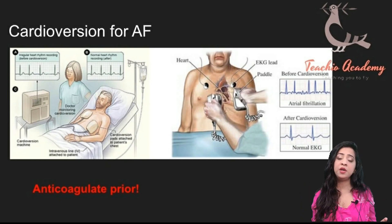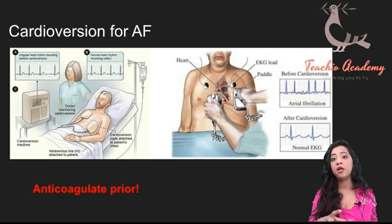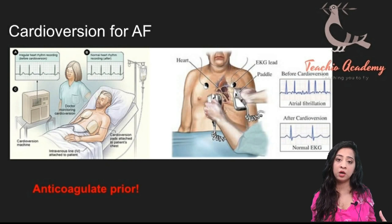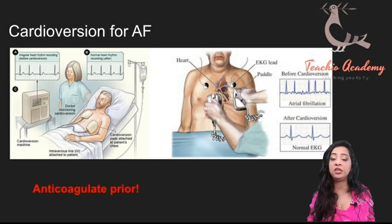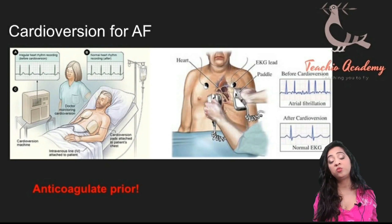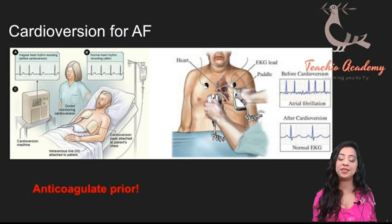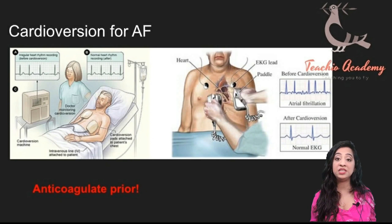Cardioversion is similar to what you do in VF or pulseless VT — you shock the heart and try to get it back to sinus rhythm. Sometimes we plan a cardioversion: a patient with disabling AF that can't be corrected with medications is brought into a cath lab for a controlled DC cardioversion, delivering 100 joules of energy and increasing in increments up to 400. Importantly, you need to make sure the patient is anticoagulated for a period before DC cardioversion. Otherwise, you might dislodge clots in the heart, causing a stroke. Some labs require two weeks of anticoagulation prior to attempting DC cardioversion.